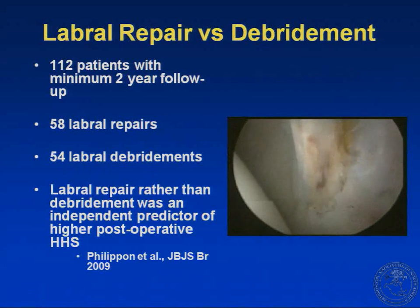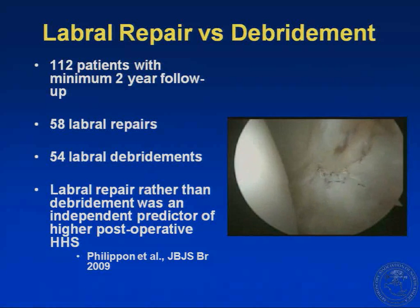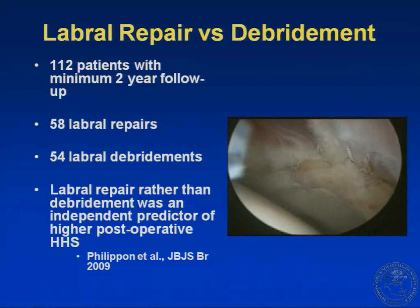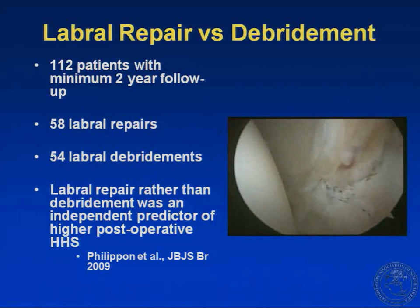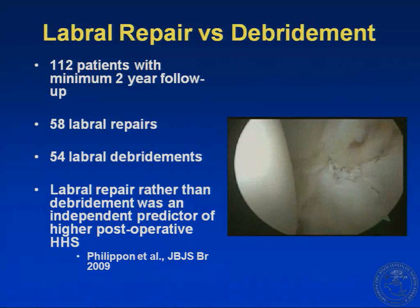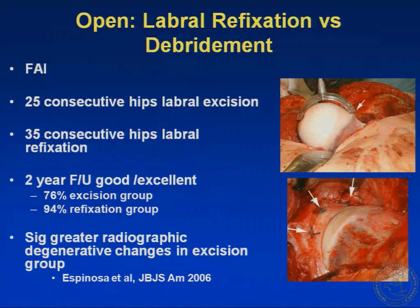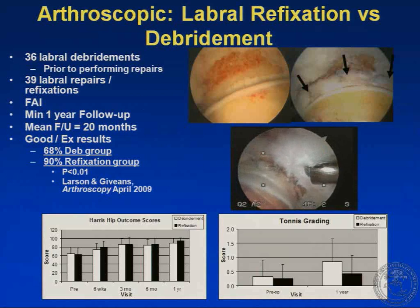With respect to labral repair outcomes, there is not a lot of literature. In Mark Philippon's study of 112 patients with FAI and minimum two-year follow-up — 58 repairs and 58 labral debridements — labral repair was an independent predictor of a higher postoperative Harris Hip Score. The first study to compare labral refixation versus debridement was an open surgical dislocation study: 25 consecutive hips with entire labral excision versus 35 with labral refixation. At two years, good-to-excellent outcomes were 76% in the excision group compared to 94% in the refixation group, with greater radiographic degenerative changes in the excision group.